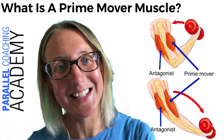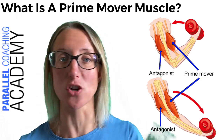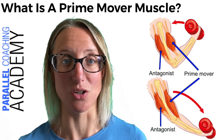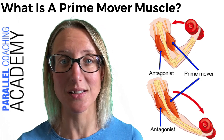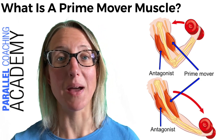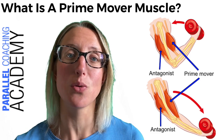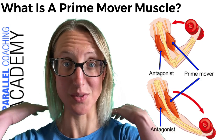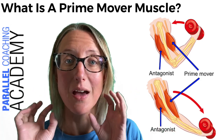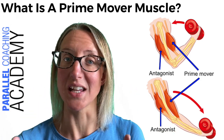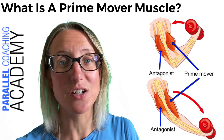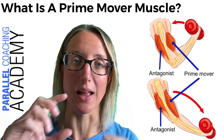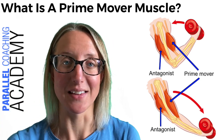The antagonist is the exact opposite of the prime mover — it is lengthening and totally relaxed during the concentric phase. Based on a principle called reciprocal inhibition, the antagonist muscle relaxes completely so that the prime mover, also known as the agonist, can contract fully without any resisting force. That's the relationship between the prime mover and the antagonist.